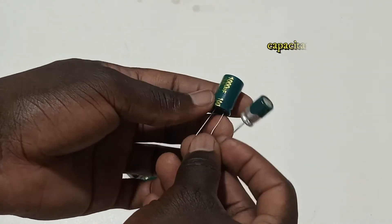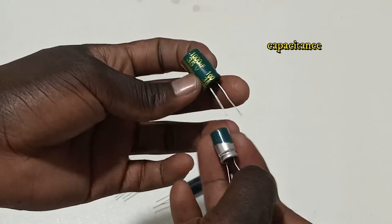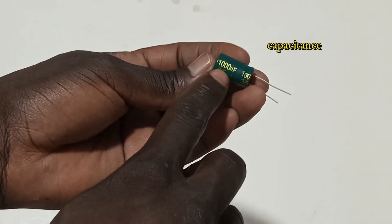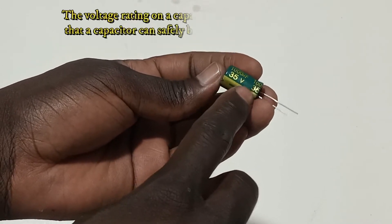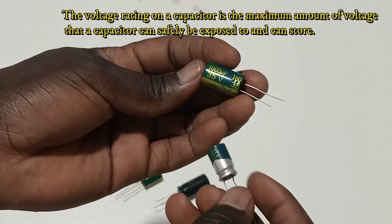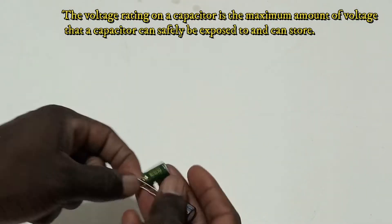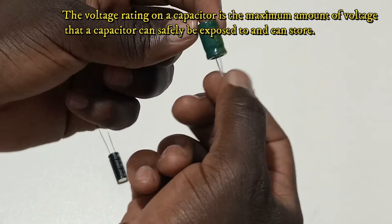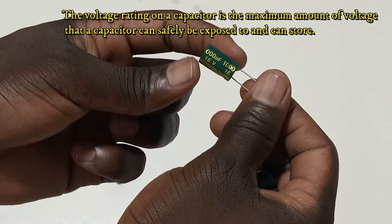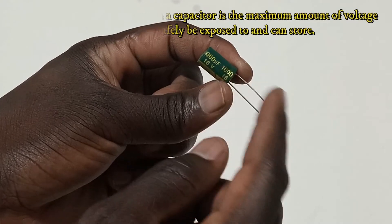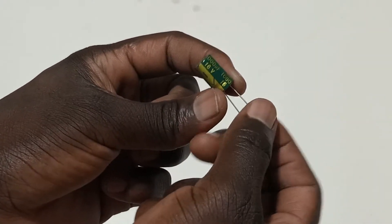Now, capacitors come in different capacities, with different ratings. For instance, the storage of this is a thousand microfarad, and the operating voltage is 35 volts. You can be able to see this. It doesn't matter about the size, as you can see, this is a thousand microfarad with the operating voltage of 16 volts.